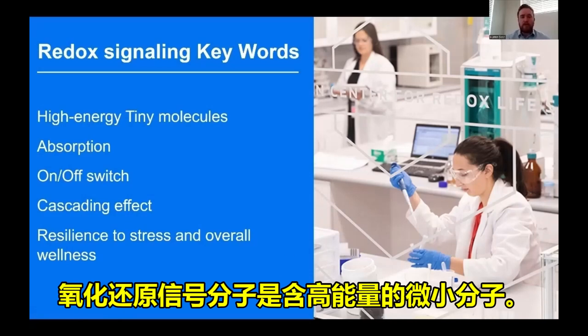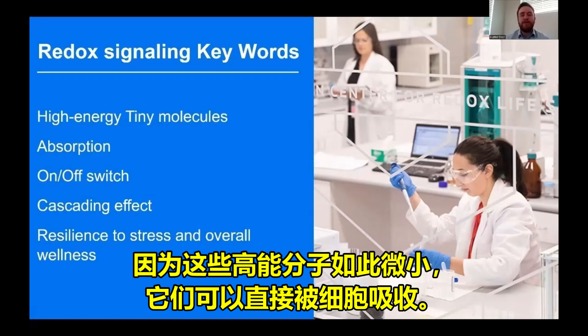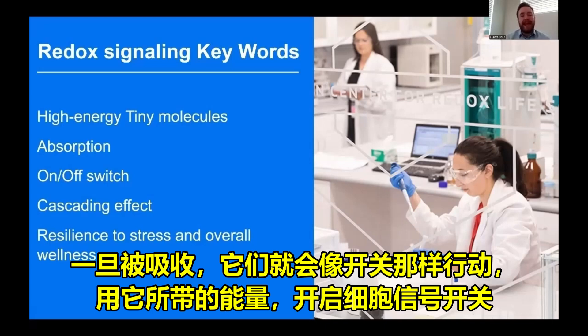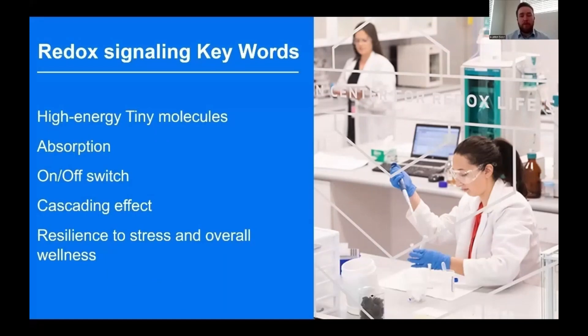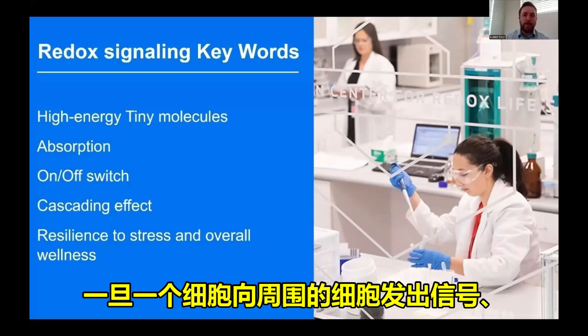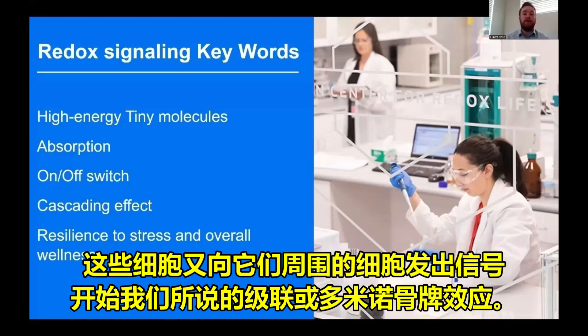Redox signaling molecules are high energy, tiny molecules. Because these high energy molecules are so tiny, they can be absorbed directly into the cell. Once they're absorbed, they act like an on-off switch, donating their energy to turn on a switch. That begins the cell signaling process. Once a cell signals to the cells around it, those cells signal to the cells around them, beginning what we call the cascade or domino effect.